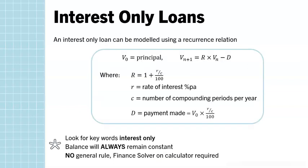Just like all other types of loans and investments, we can model this using a recurrence relation. Even though our balance stays the same, we are still finding the rate and payment amount. When looking at questions around this, look for the keyword 'interest only loan' — make sure you're looking out for that key phrase.